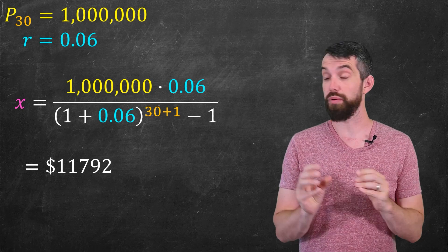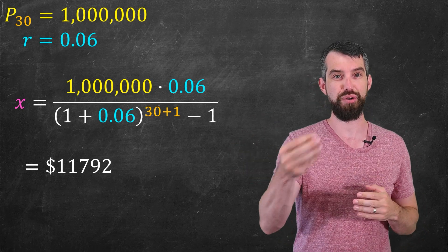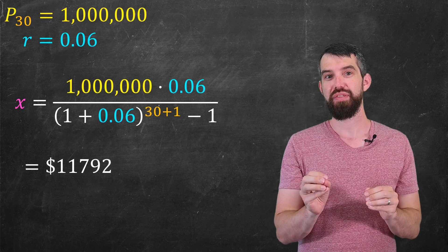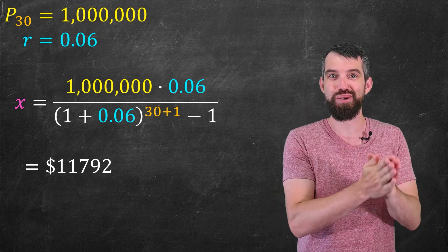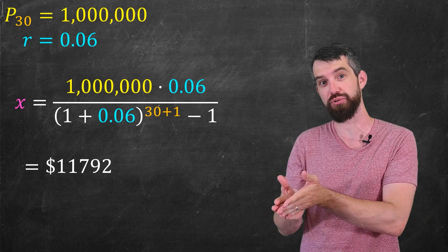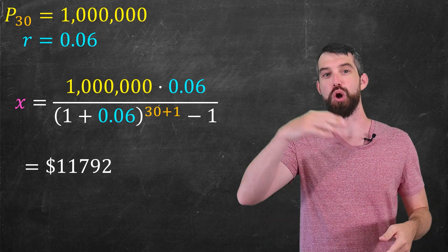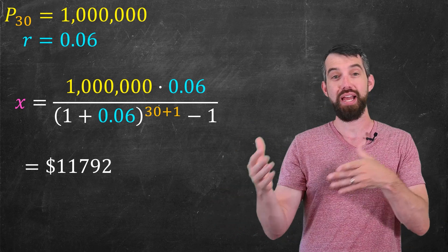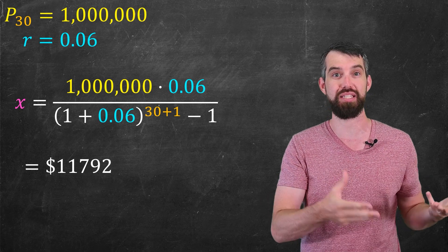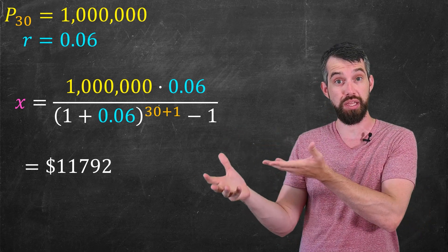Now, what I really want to focus on with this 11,792 number is just how much smaller that is than the 33,333 that we began with. The scenario that would happen if there was no interest. So instead of spending over 30,000 a year to save up a million dollars, now we're assuming just a little over 10,000 per year needs to be saved to make a million dollars in 30 years.